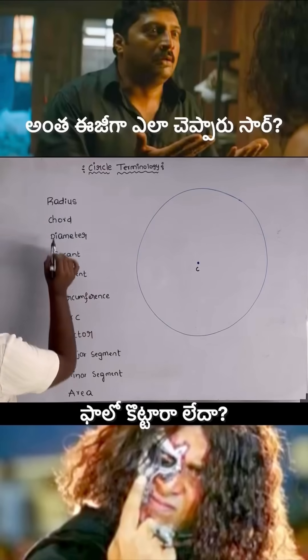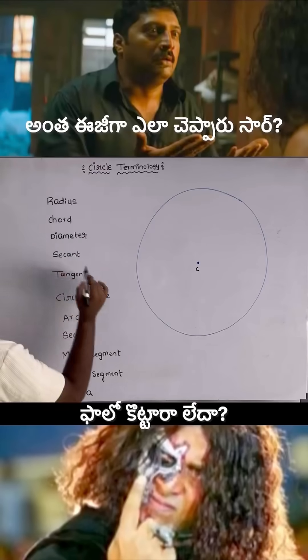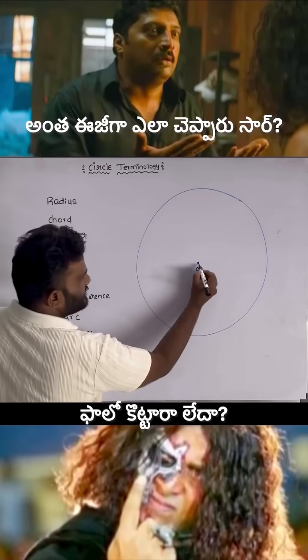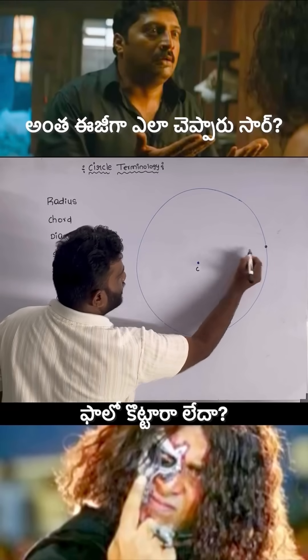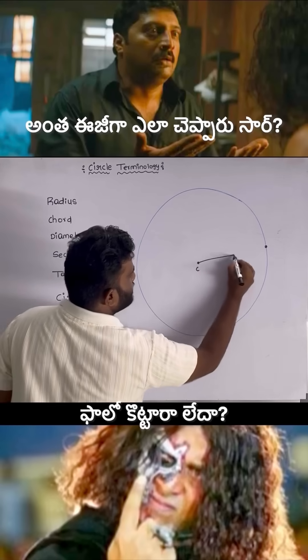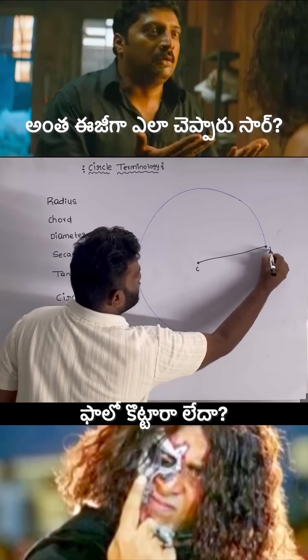Circle terminology. Radius: the distance between the center and any point on the circle. This distance is known as radius.